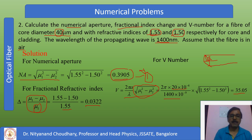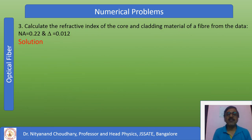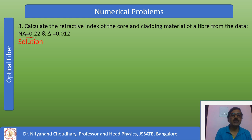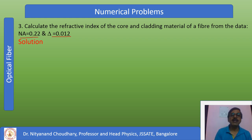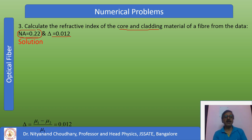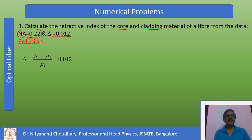Problem number 3: calculate the refractive index of the core and cladding from the given data. Numerical aperture is given as 0.22, and fractional refractive index change delta is given as 0.12. Using these two values, we need to find both refractive indices. We know NA = sqrt(mu1² - mu2²), and delta = (mu1 - mu2) / mu1. This is equation number 1.